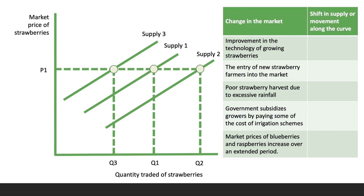The first change is an improvement in the technology of growing strawberries. The supply curve will shift outwards to the right — improved production technology would lower costs and increase productivity or yields, so S1 shifts to S2. The second change is the entry of new farmers and producers into the market. There'll be another outward shift, since there are more producers selling to the market, so the supply of strawberries at a given price will be higher — S1 shifts to S2.